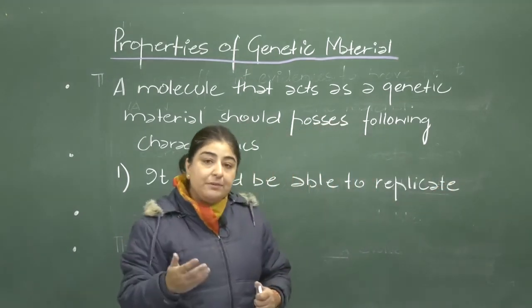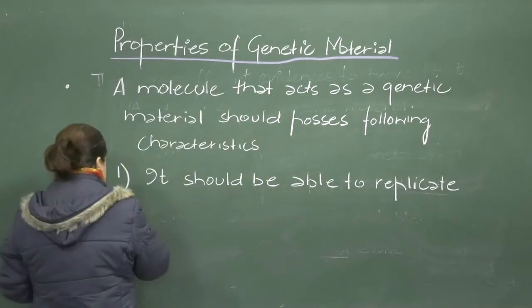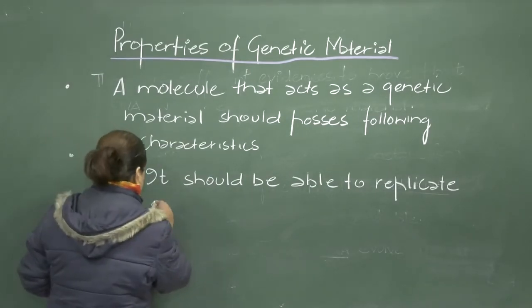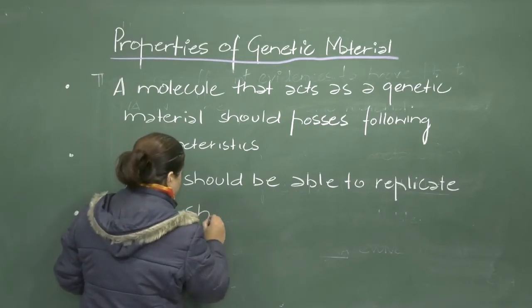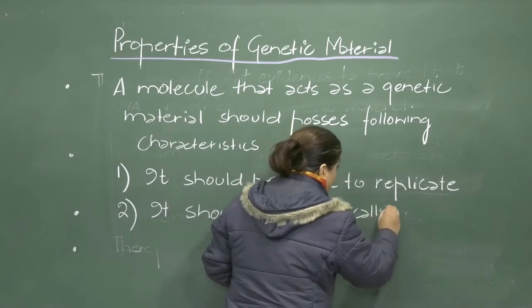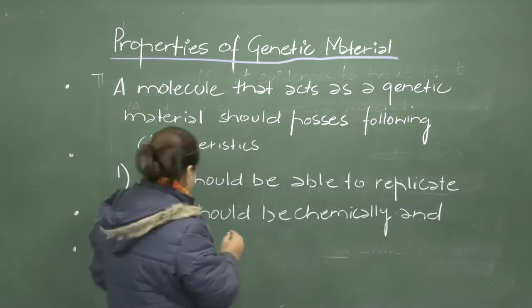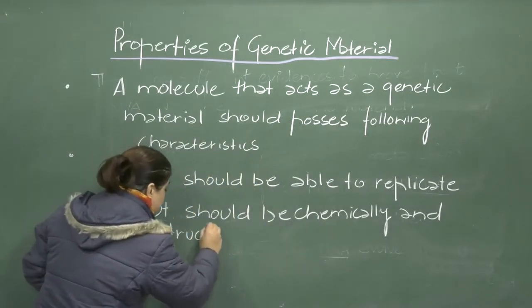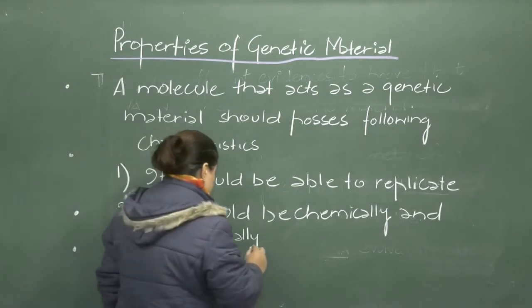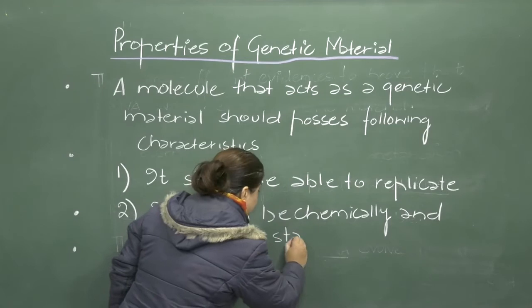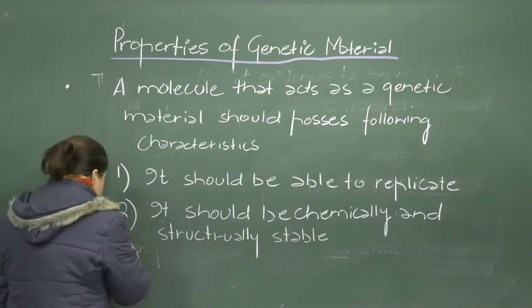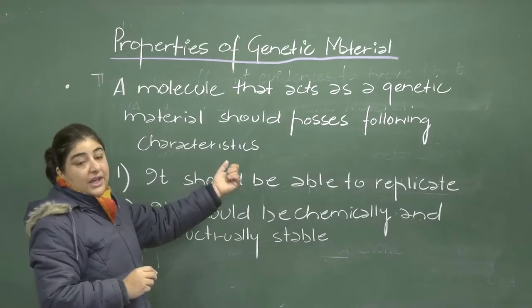The second property of the genetic material should be that it should be chemically and structurally stable.